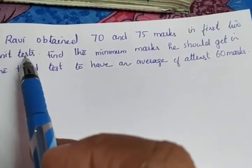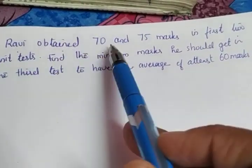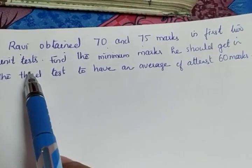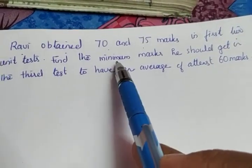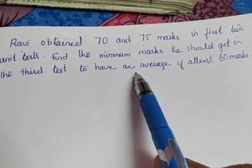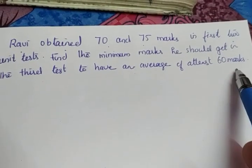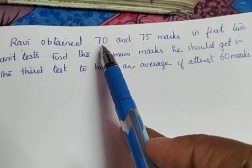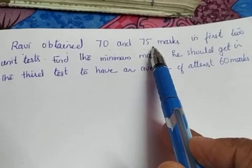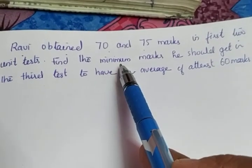Moving to the next question: Ravi obtained 70 and 75 marks in the first two unit tests. Find the minimum marks he should get in the third test to have an average of at least 60 marks. So he is getting 70 and 75 marks in the first two tests and we have to find the minimum marks.